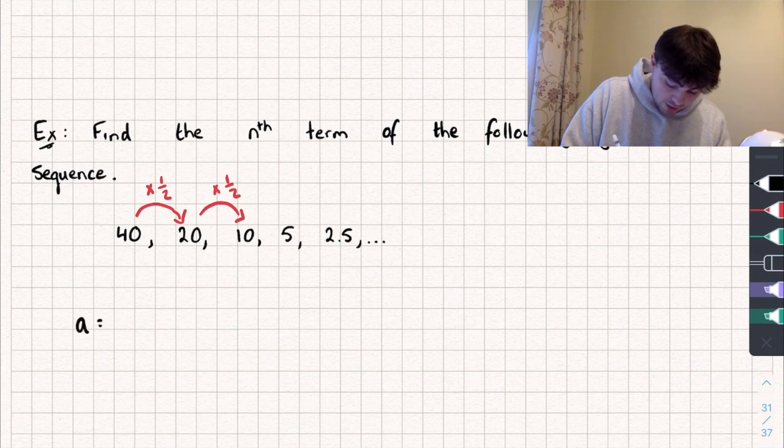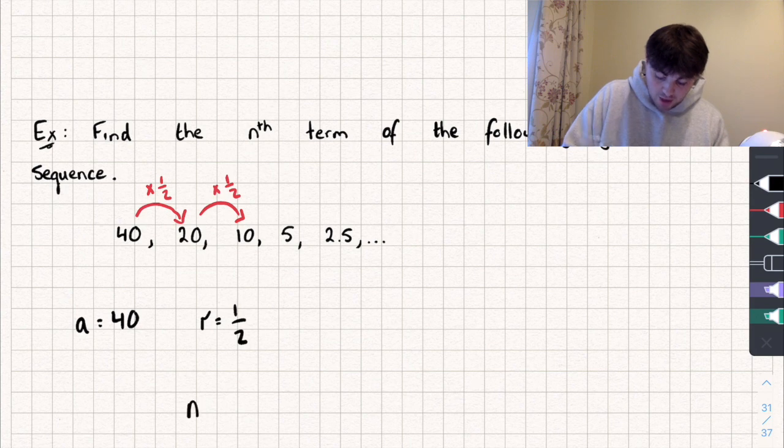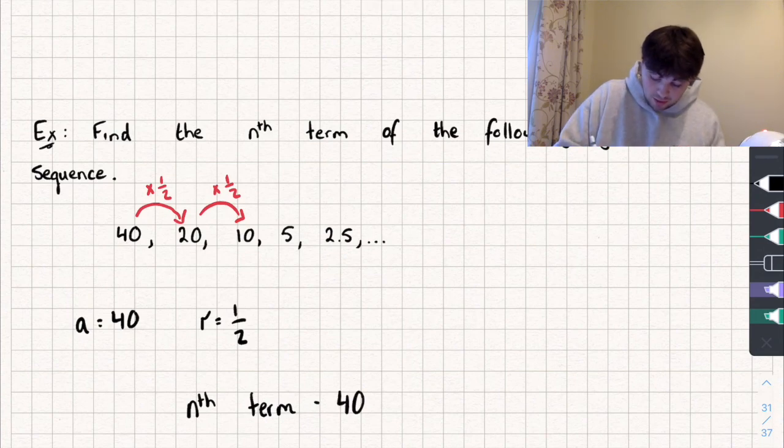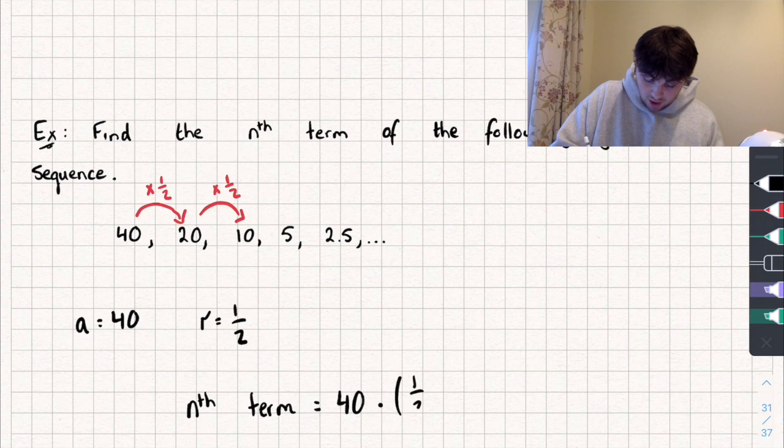And we know the first term is 40, and we have a common ratio r of 1 half. And so the nth term is going to be equal to, well, we had the formula, it's going to be equal to a, which is 40, multiplied by the common ratio r, which in this case is a half, to the power of n minus 1.